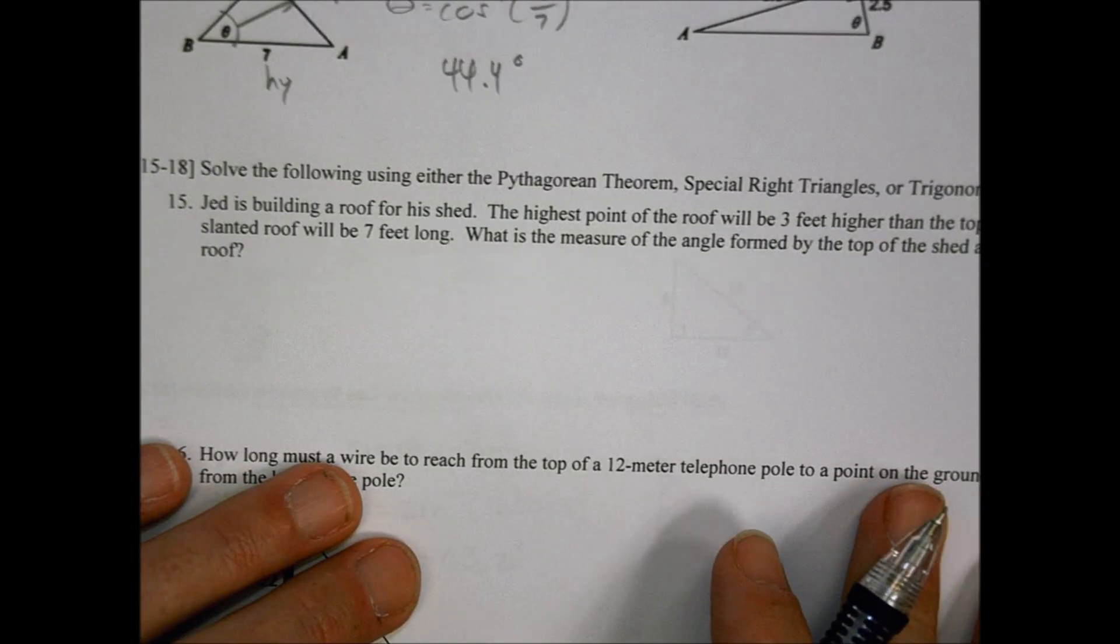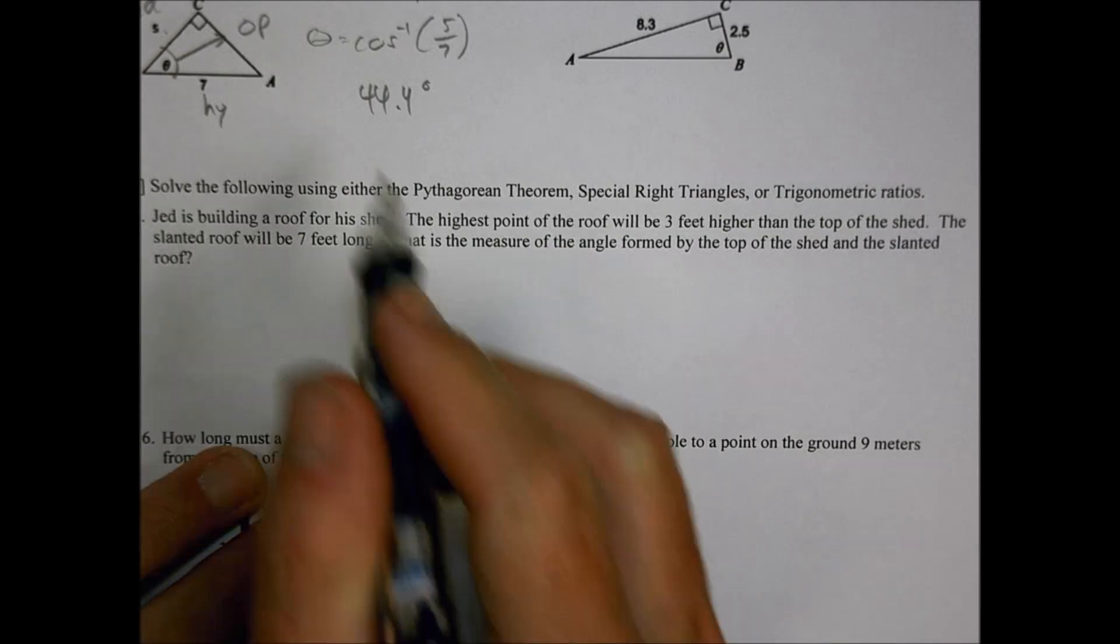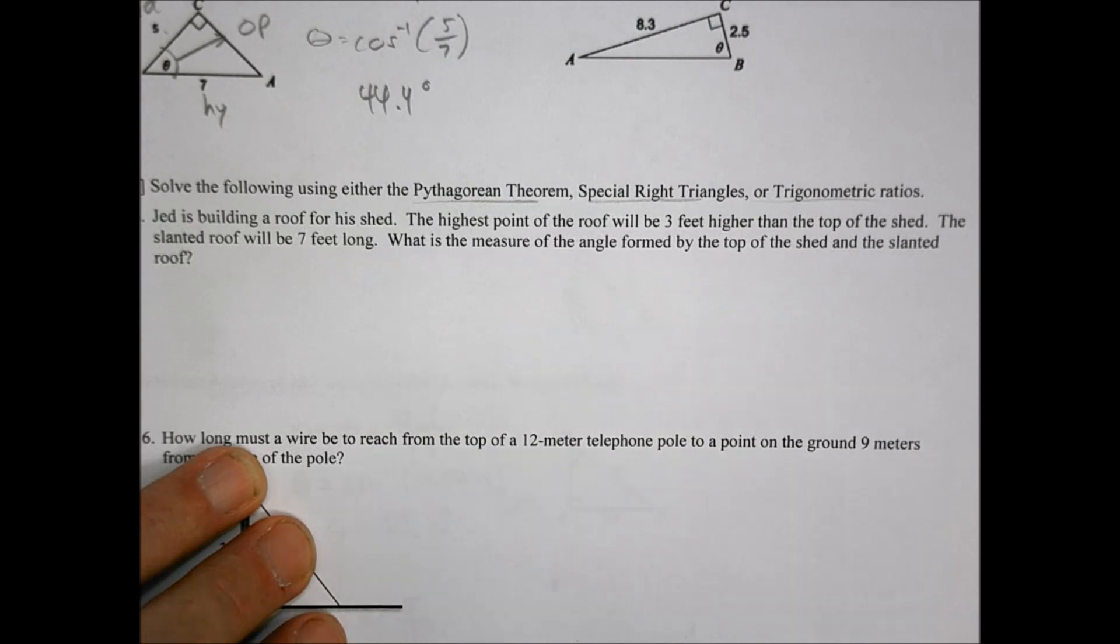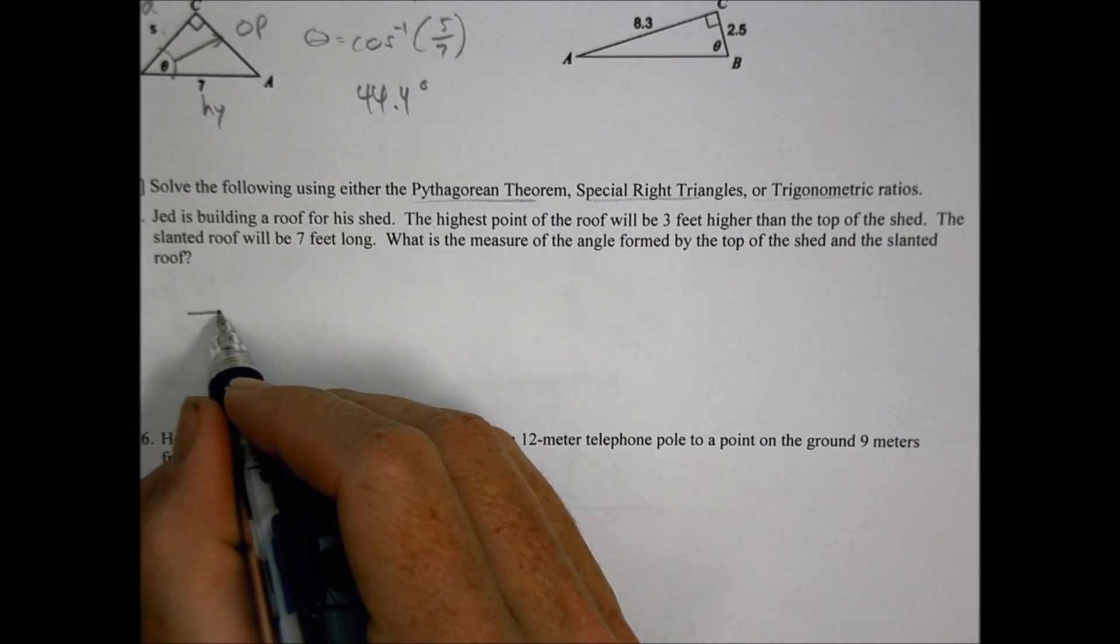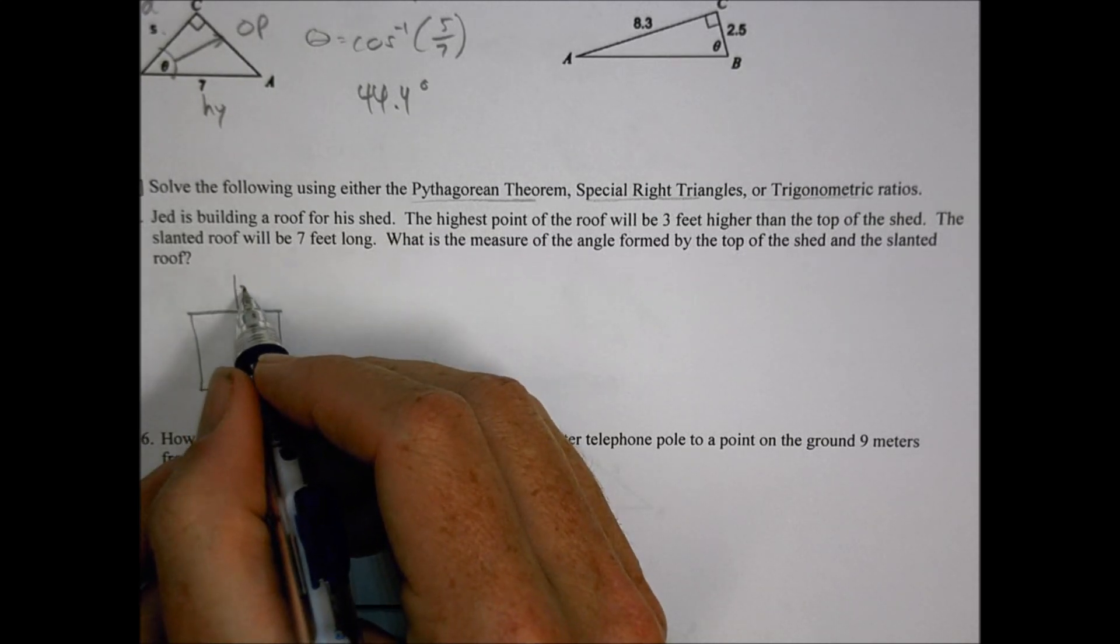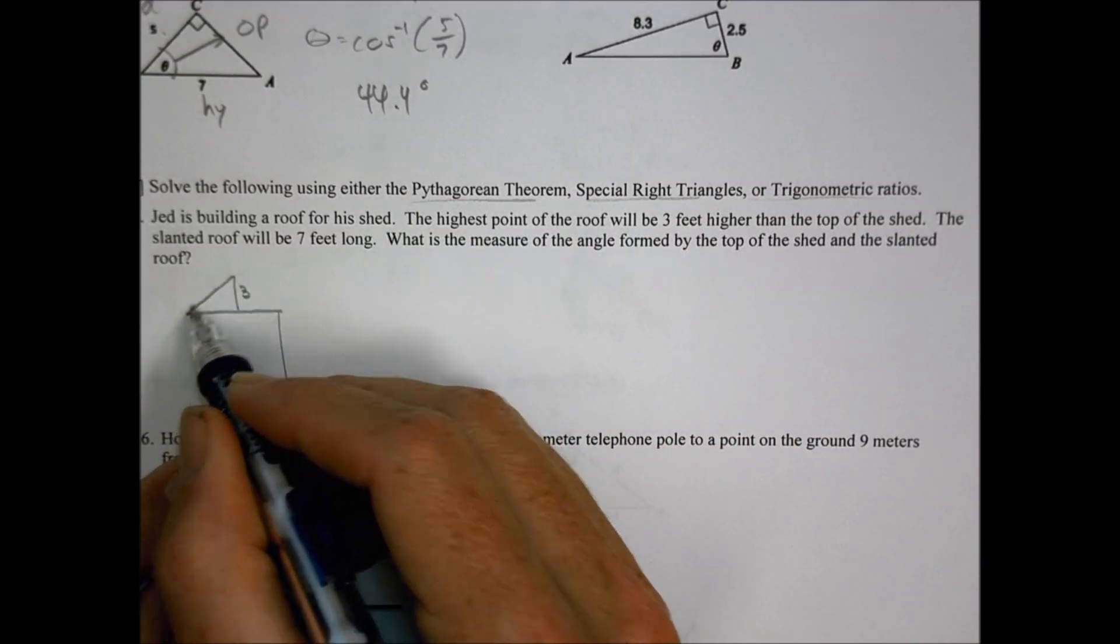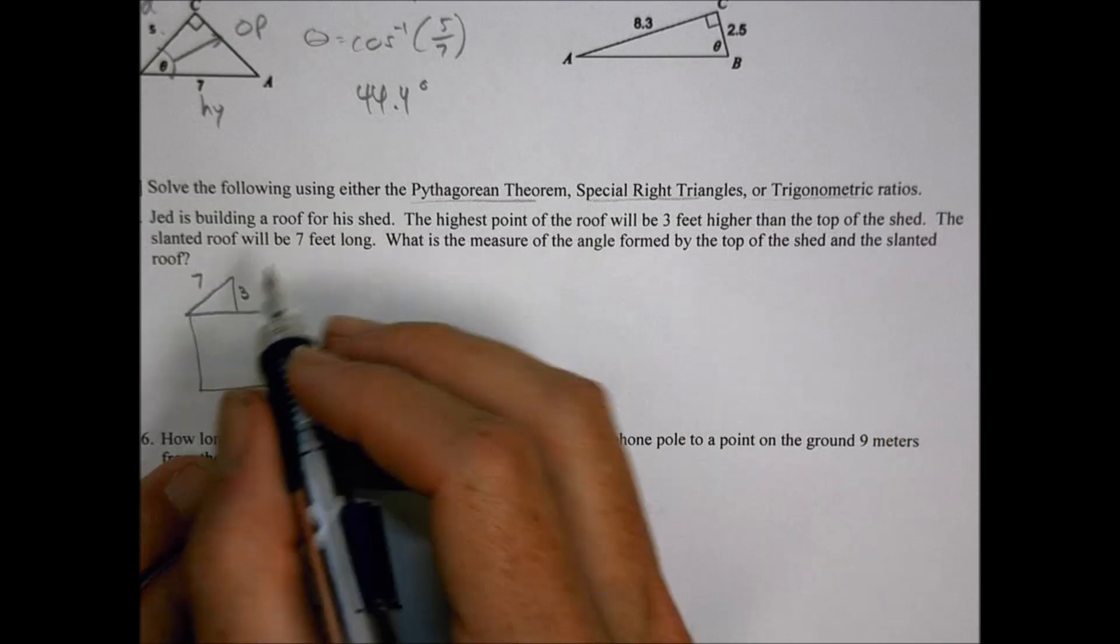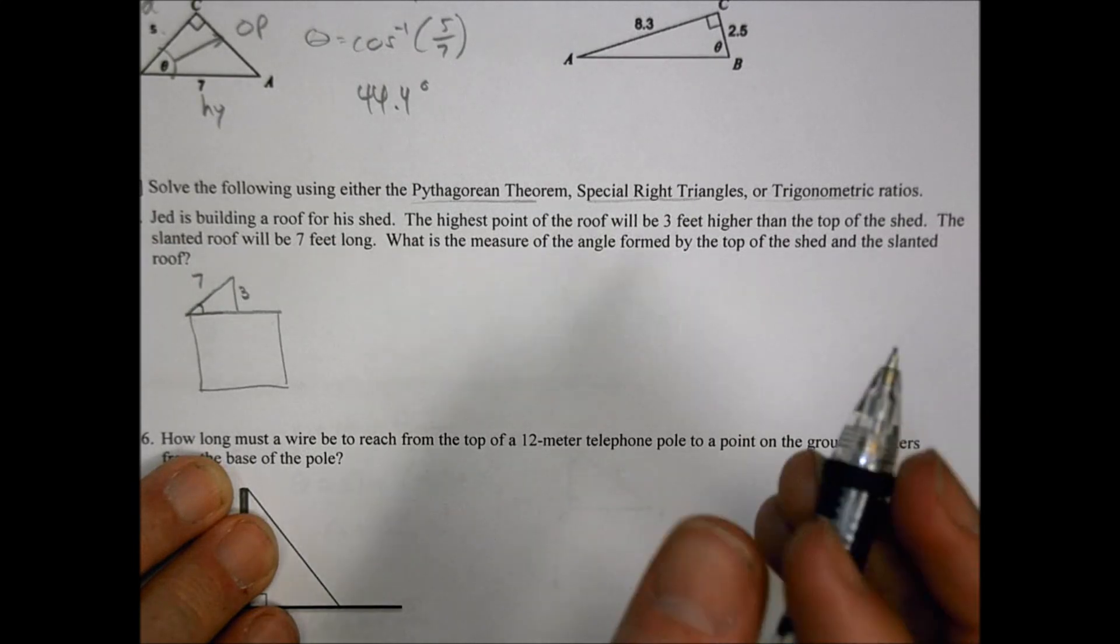So let's look at the word problem here. It says that there's a - you can read that there. Jed is building a roof for his shed. The highest point of the roof will be three feet higher than the top of the shed. So here's a shed. And the highest point is going to be three feet higher than the top of the shed. The slanted roof will be seven feet long. So my roof is going to be seven feet long. What is the measure of the angle formed by the top of the shed and the slanted roof? So the top of the shed and the slanted roof, what is this angle measurement right there is our question. So we have a 90 degree there.